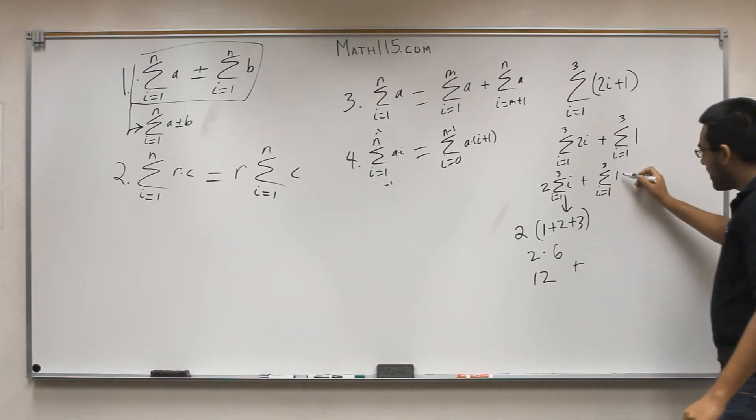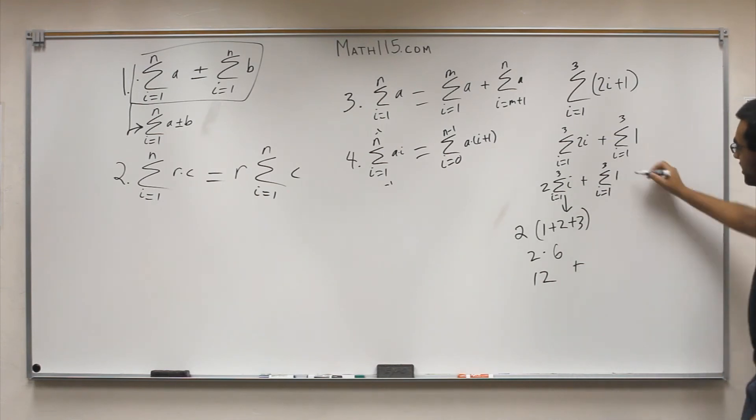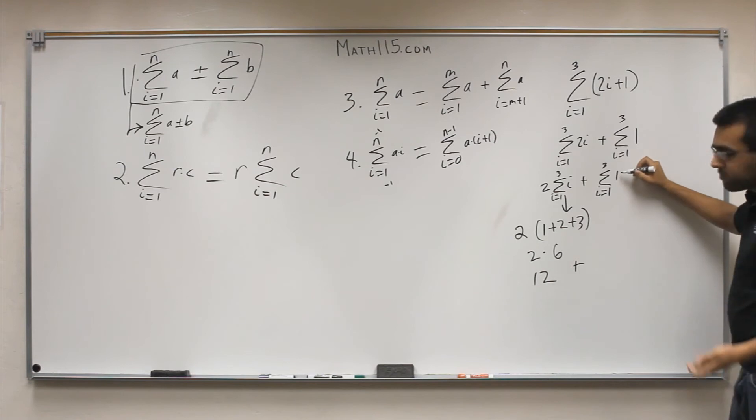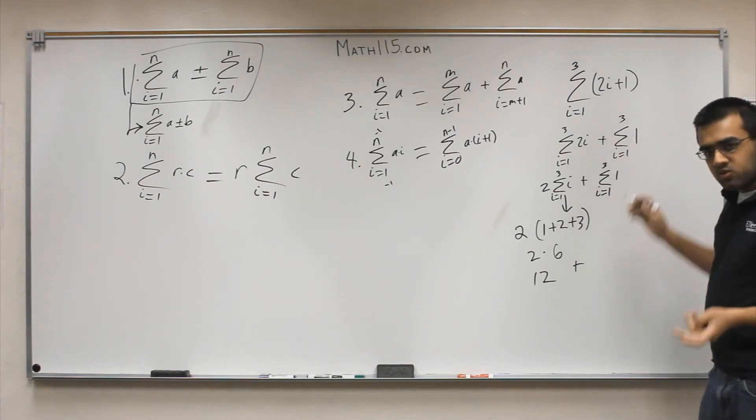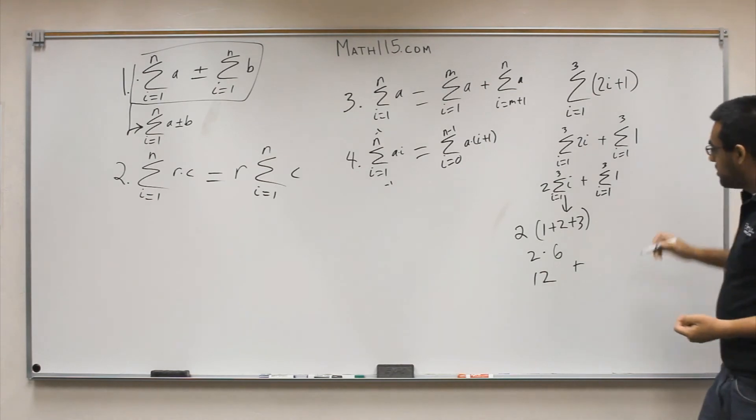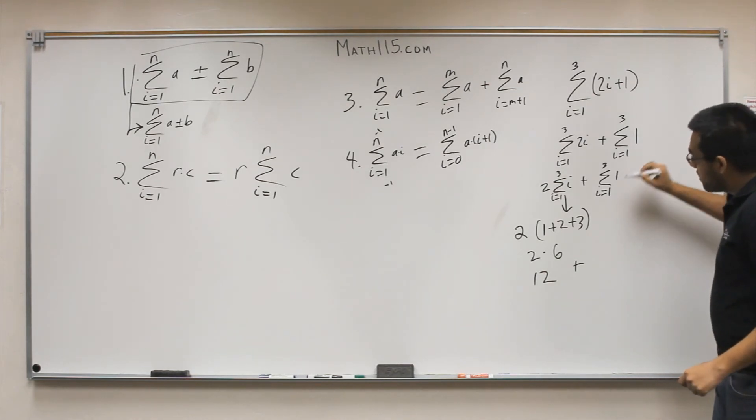But we know we have this right summation left over. Here, this is a 1. This is a number, not a variable. You can't plug 1 into 1. That doesn't make sense. You only plug numbers into variables. So the way this will work is,